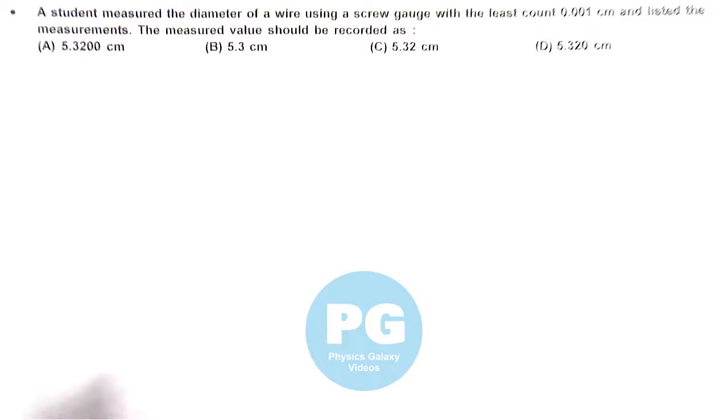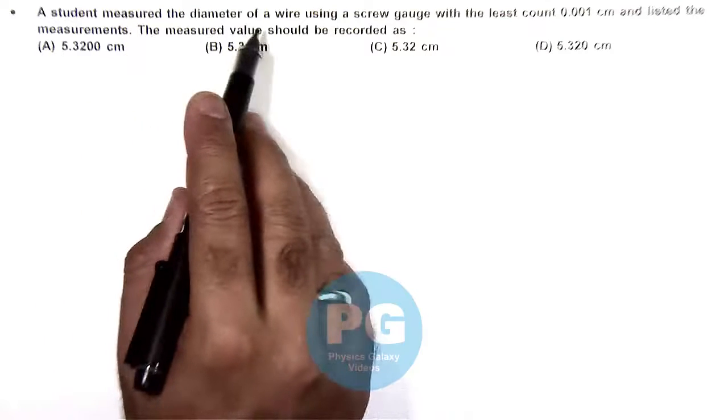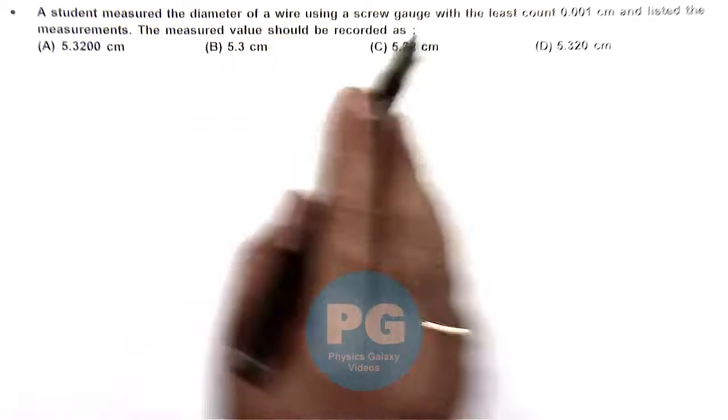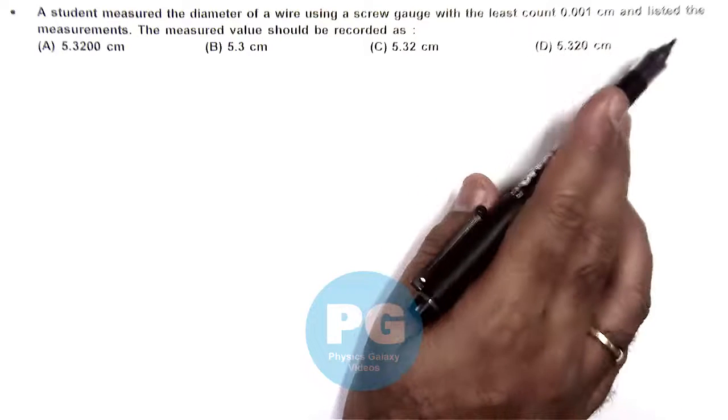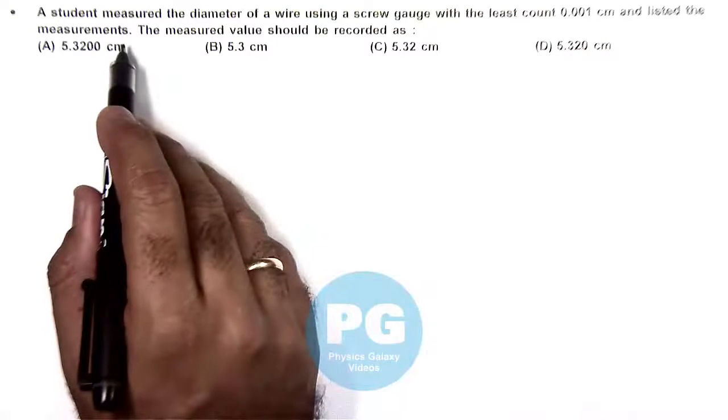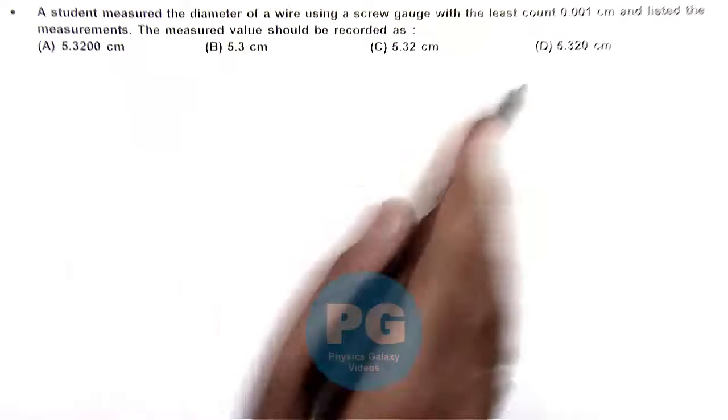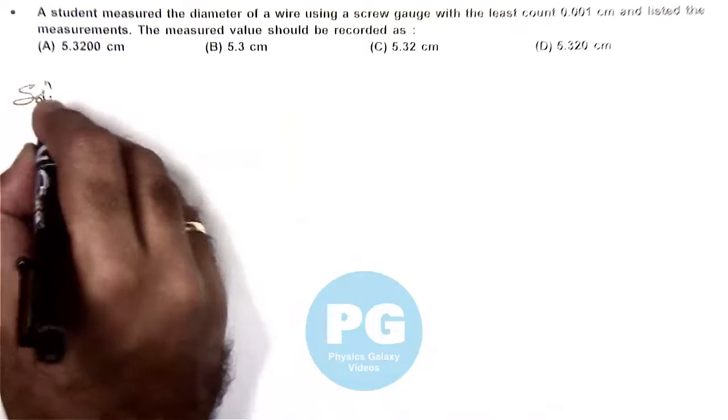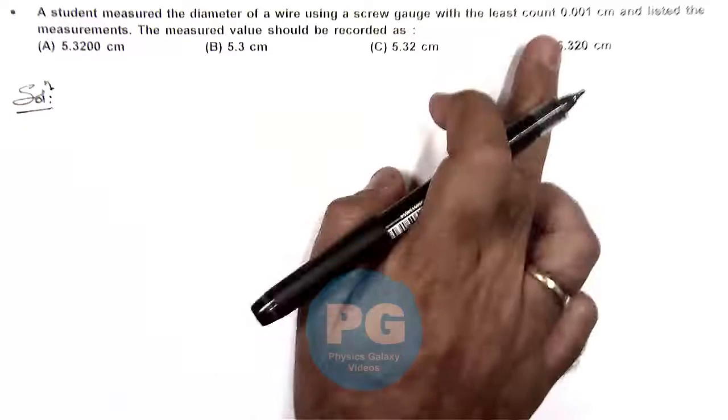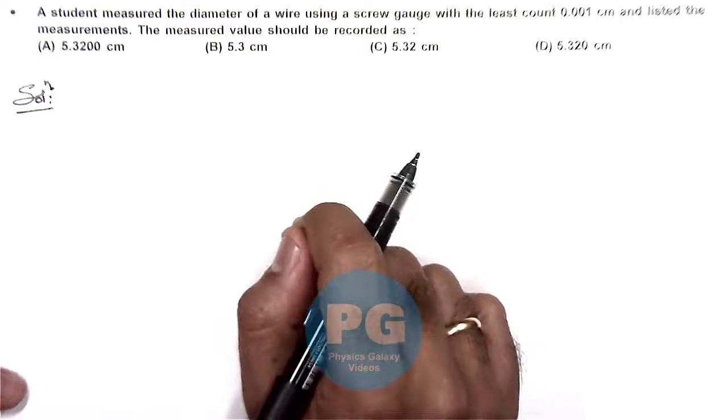In this question, a student measured the diameter of a wire using a screw gauge with the least count 0.001 centimeter and listed the measurements. The measured value should be recorded as we need to choose out of the four given options which one would be recorded if least count of the instrument is 0.001 centimeter.